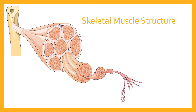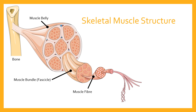Let's begin talking about skeletal muscle structure so we can recognise what it is we're talking about in the context of the overall muscle when we come to talk about the sarcomere. A muscle as a whole will begin on a bone, it will attach to a bone via a tendon, and the muscle belly will be made up of a collection of muscle bundles — those are technically known as fascicles. Each fascicle is made up of smaller units known as muscle fibres.